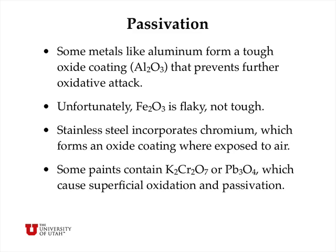Stainless steel is an alloy of steel that contains many metals including chromium, which can form an oxide coating on the surface to protect the underlying iron from further oxidation. You can also paint steel or iron with paints that contain oxides of chromium or lead oxide, which causes superficial oxidation and passivation of the surface. However, you have to be careful where you use these paints because chromium — especially chromium-6 — and lead oxide are quite toxic, and must not be used in environments where they could be accidentally ingested by humans or animals.